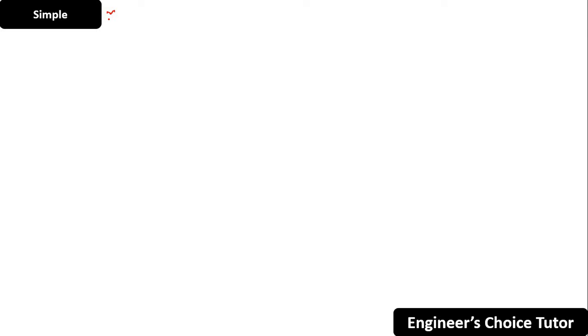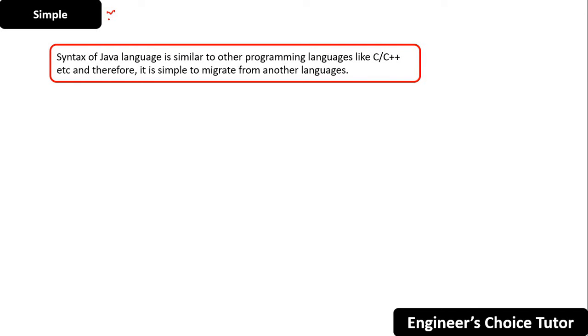Java is a very simple language — even a child can understand it. The first reason is that the syntax of Java language is similar to other programming languages like C and C++, and therefore it is simple to migrate from another language. The syntax of Java is also easy to understand and read.